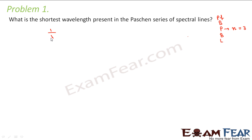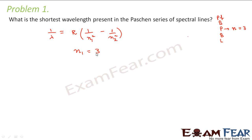Let us apply Rydberg's formula, which is 1 by lambda equal to R into 1 by n₁ squared minus 1 by n₂ squared. For Paschen, n₁ is equal to 3. Now we have to calculate the shortest wavelength.